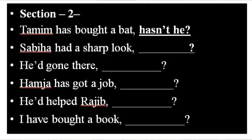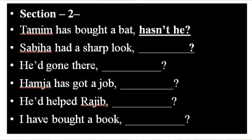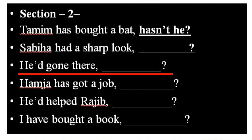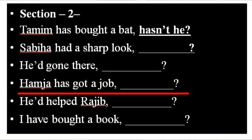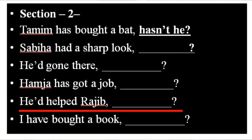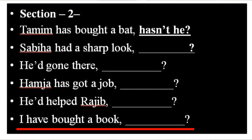Section two covers the use of have, has, and had. For example: 'Tamim has bought a bat' — the tag is 'hasn't he?' because Tamim is a boy, so we use the pronoun as subject. Now solve: 'Sabiha had a sharp look'; 'He had gone there'; 'Hamza has got a job'; 'He helped Rajiv'; and 'I have bought a book.'